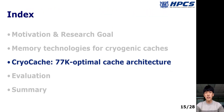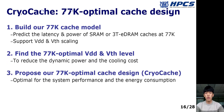Until now, we have selected optimal memories for cryogenic caches. From now on, we will introduce CryoCache, the cryogenic-optimal cache architecture targeting high performance and low energy consumption. We first build our cryogenic cache model, which can predict the latency and power of cryogenic caches. Then, using the cache model, we find the optimal voltage level to reduce dynamic power and cooling cost. Finally, we propose our optimal cache design in terms of system performance and energy consumption.